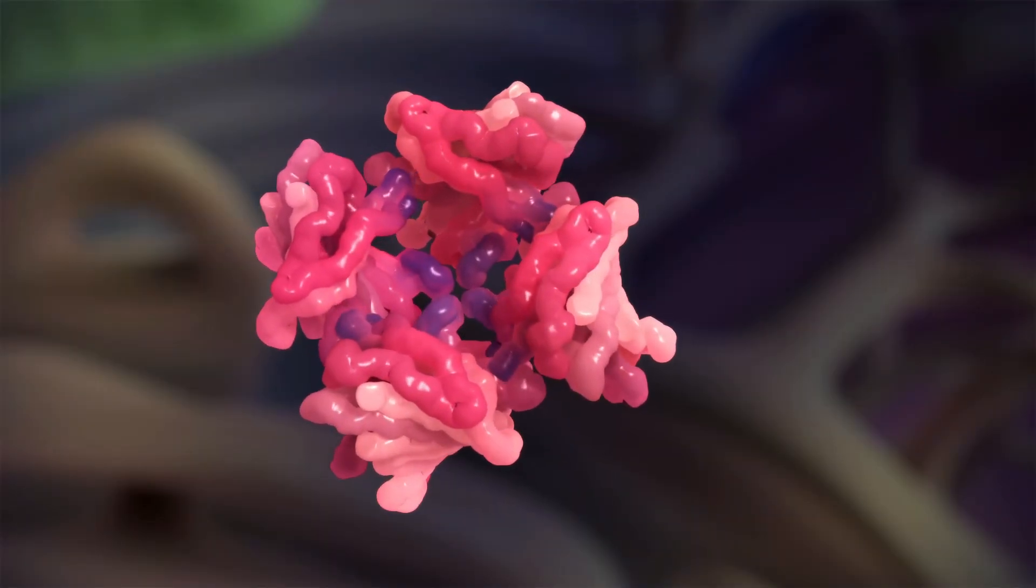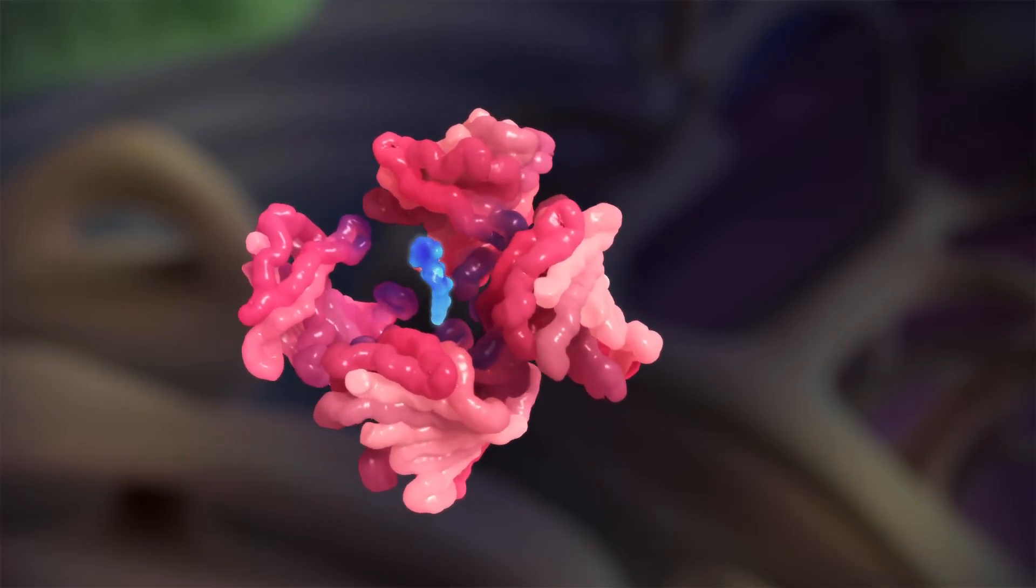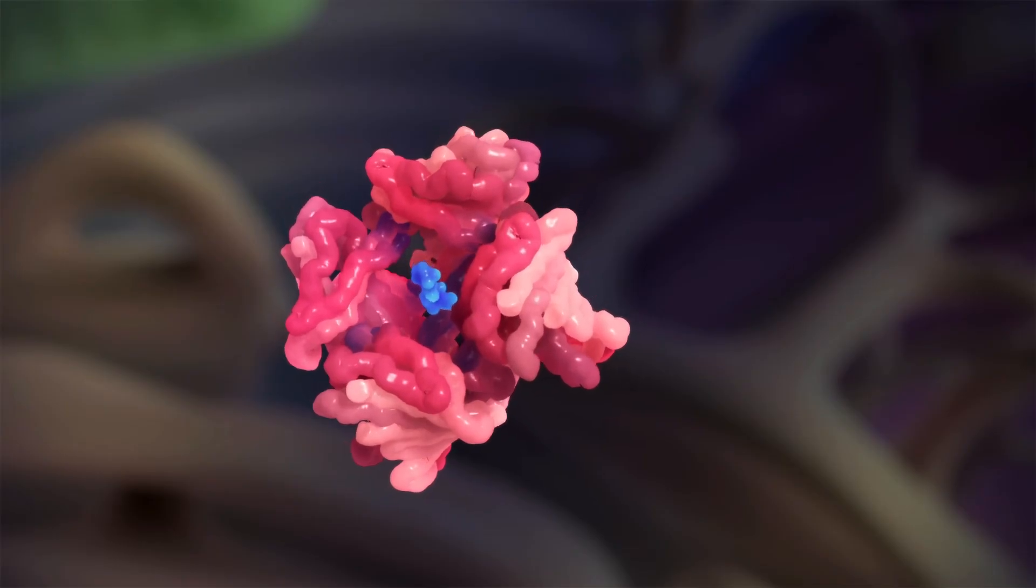Drugs which stabilize the four-unit complex are also being used as a way of reducing the chances of TTR misfolding and forming amyloid.